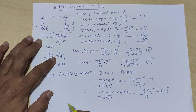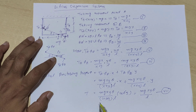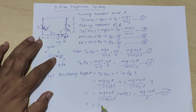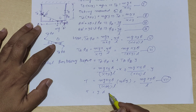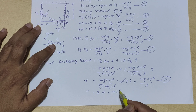Now, we already know that torque equals I·alpha, and I equals m·k² times alpha, where k is the radius of gyration.